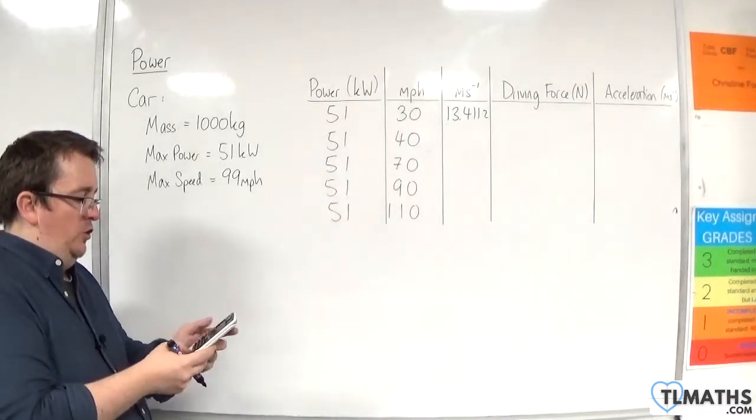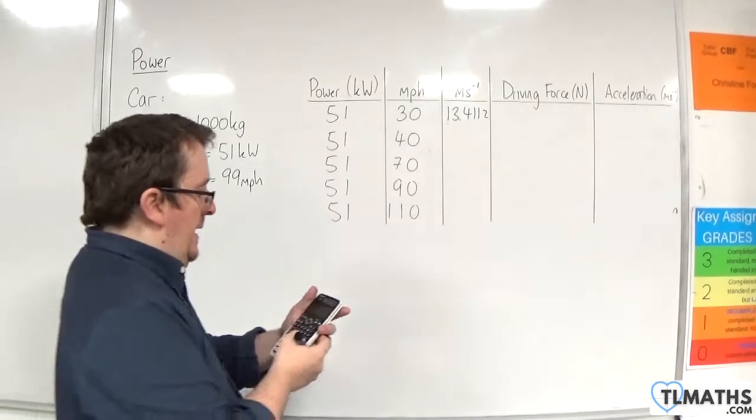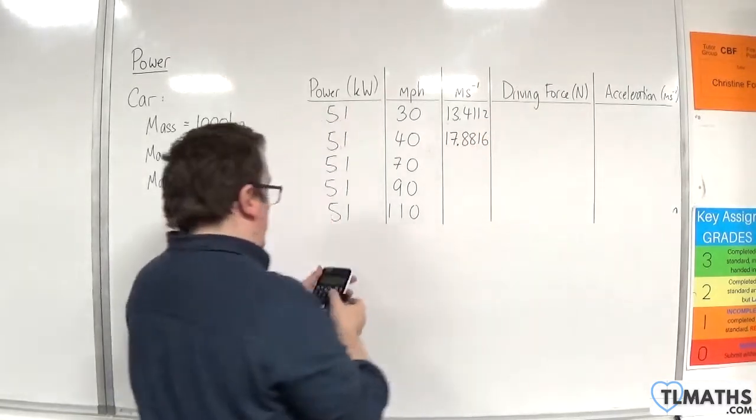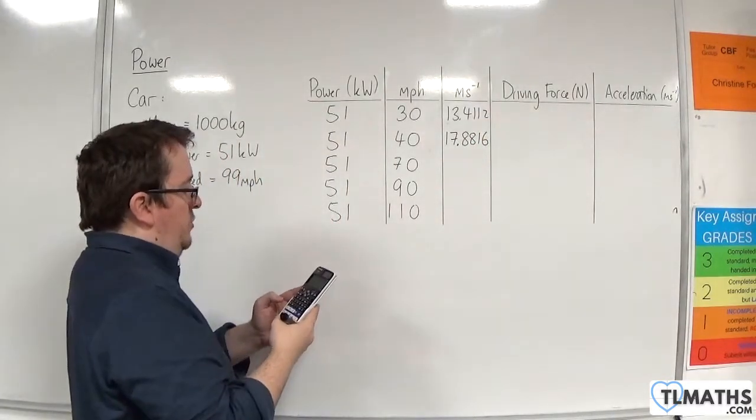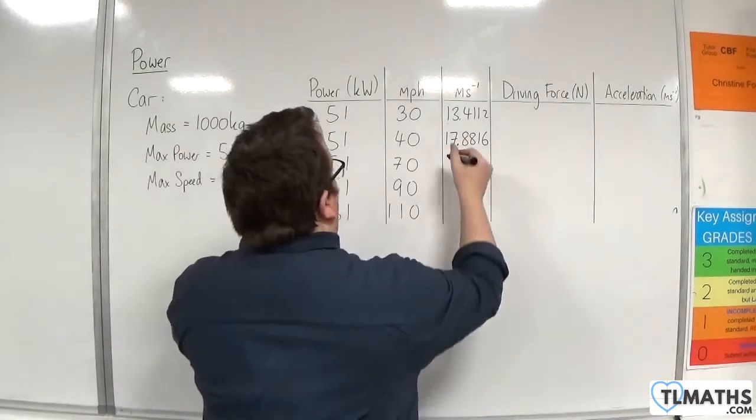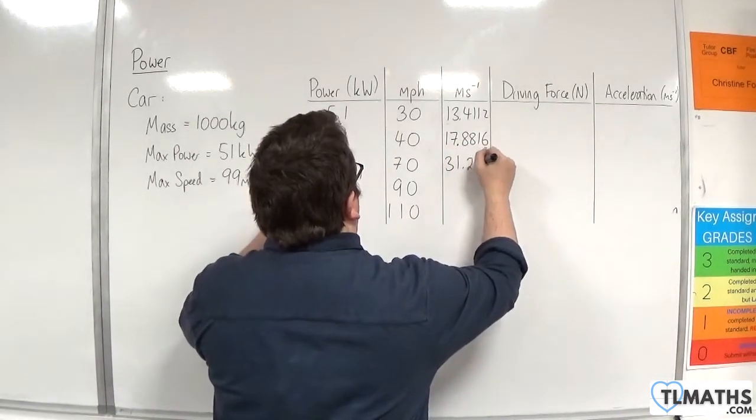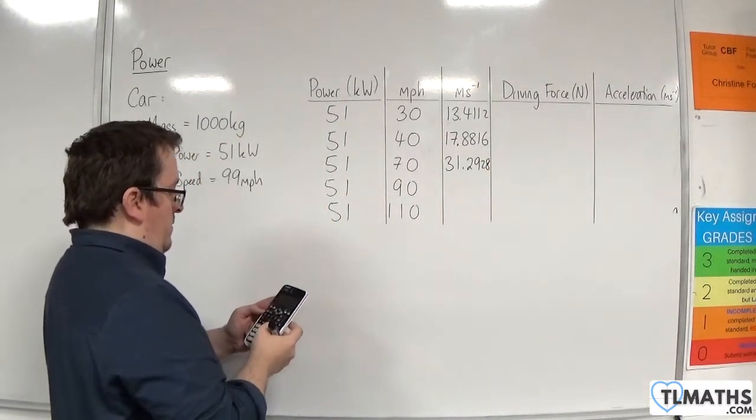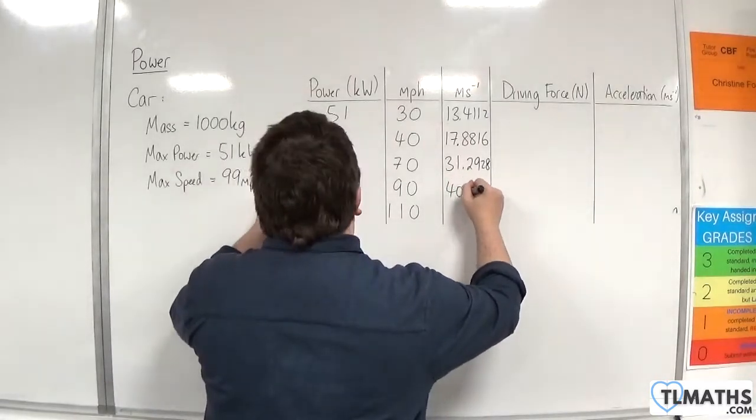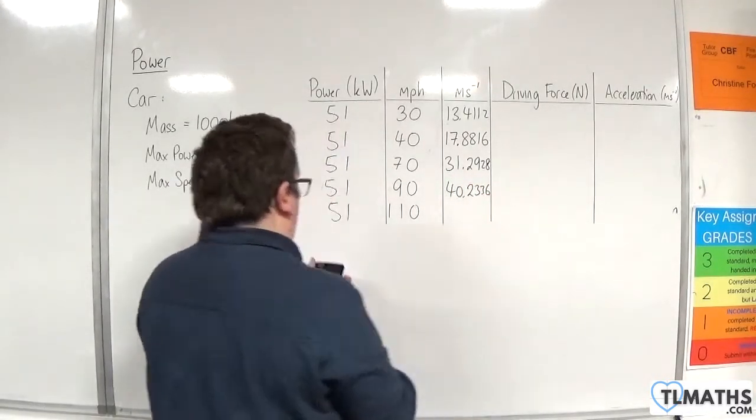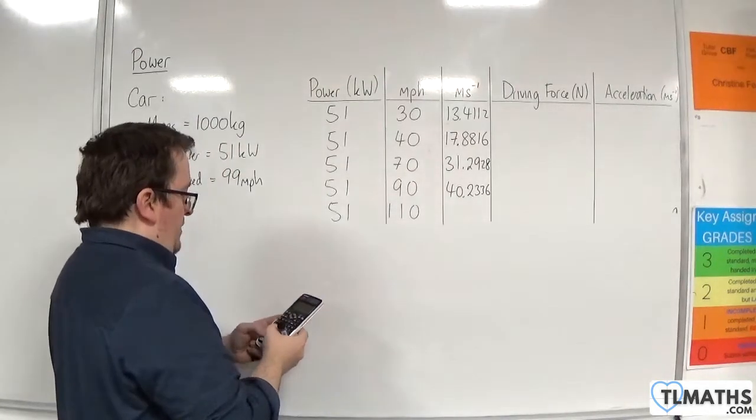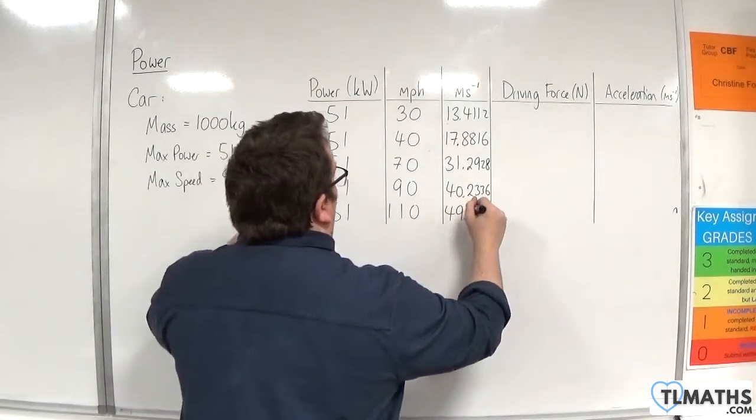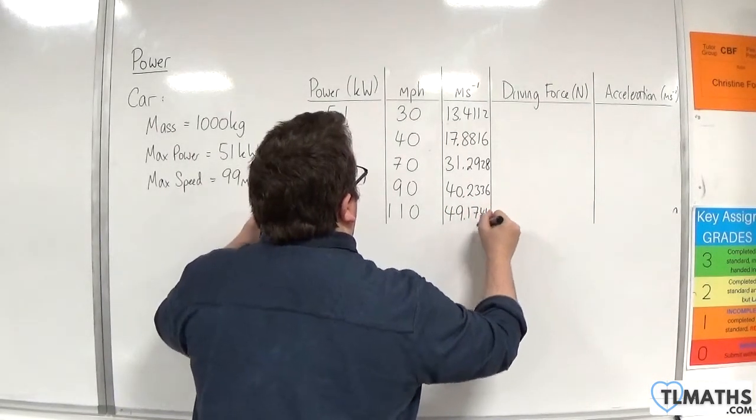I'm just going to go back into that. I'm going to change it to 40, and I should be getting 17.8816. Going back into it and changing it to 70, that's 31.2928. Go back in, change it to 90, and we get 40.2336. And change it to 110, and we get 49.1744.